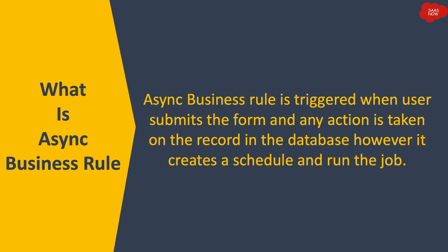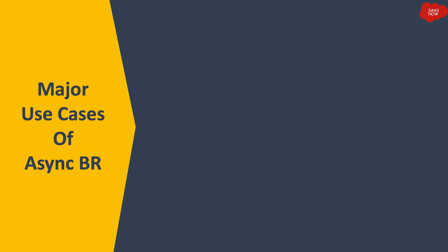The difference is: with an after business rule, if you are updating the assignment group or the description, you want those values to be populated right away — users should see that data immediately when the business rule runs. But with an async business rule, the system can run and process the action in the backend, and once it gets the response, it can process further actions.